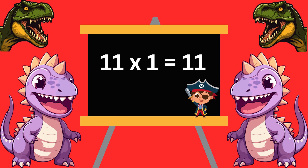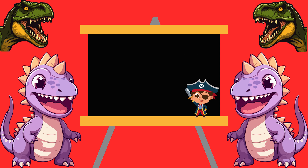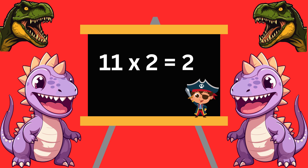Table of Eleven. Eleven ones are eleven. Eleven twos are twenty-two.